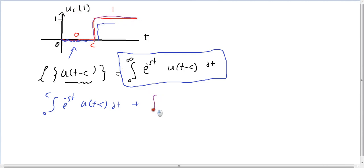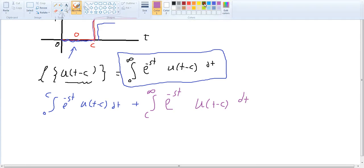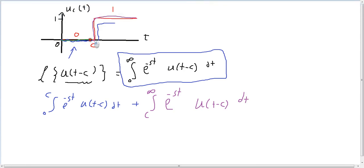So we're going to take from c to infinity, e to minus st multiplied by u(t-c). As you can see from the drawing right there, the value here is 0. So this function when you integrate it, we're going to have 0. So we only have this one.